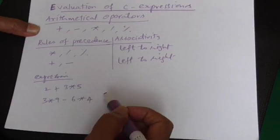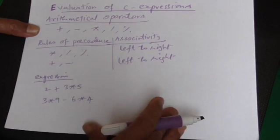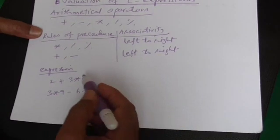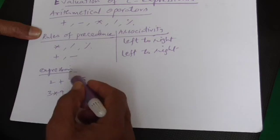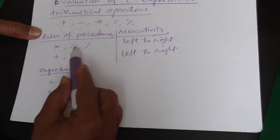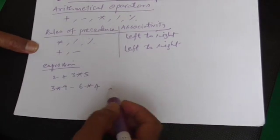There are two rules. One is called Rules of Precedence, the other one is called Associativity Rule. The Rules of Precedence says when there are different operators, which operator is to be executed first. That is stated by the Rules of Precedence.